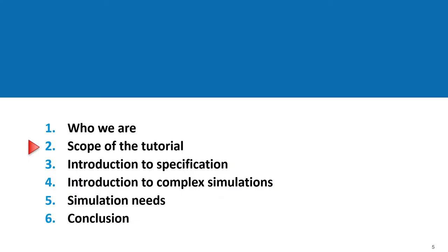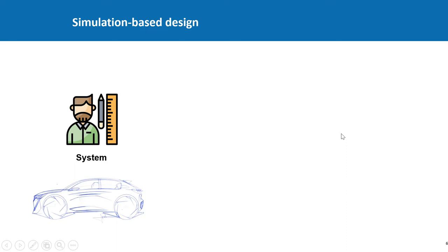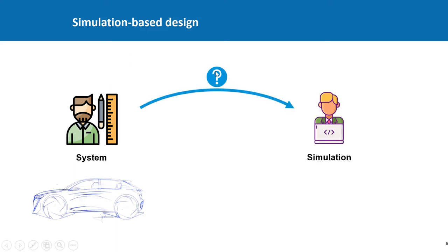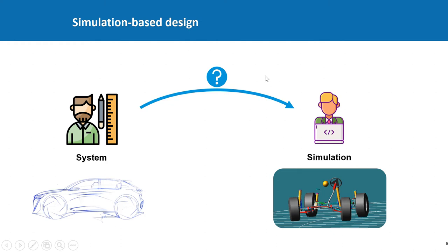Let's get back to the scope of the tutorial and see why this topic is important. Let's say that you work on the development of a system like a car. The system's development raises many questions, and many of them could be answered by simulation. When you need a simulation, you have to explain this need. Even if you do the simulation yourself, you must have a clear idea of your need. A simulation can then be developed and the results will help you to take a decision — and you want those results to meet your need.